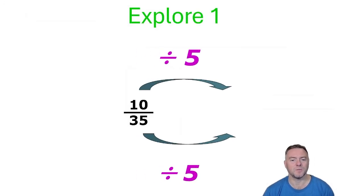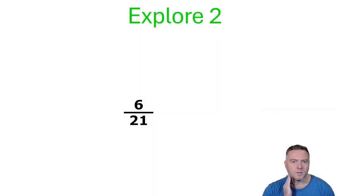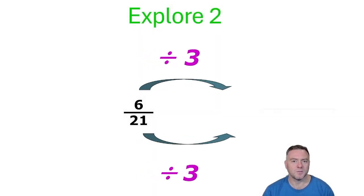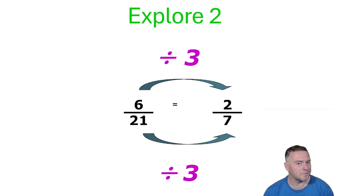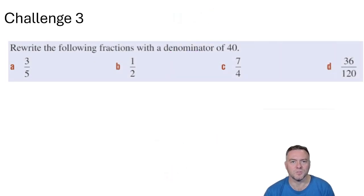If we have 10 out of 35 — we've seen that before — we divide the top and the bottom by 5, so we get 2 out of 7. Then 6 out of 21: we can divide both the top and the bottom by 3, which then gives us 2 out of 7 as well. We've seen that one before.